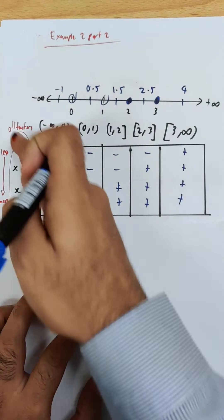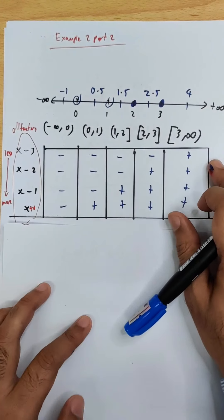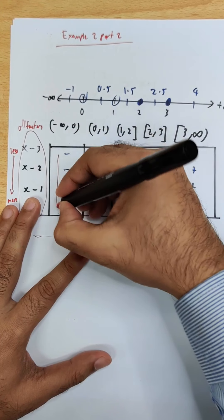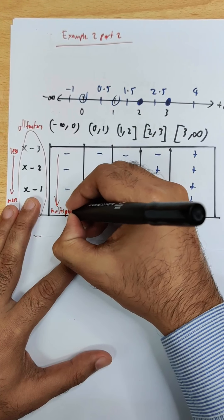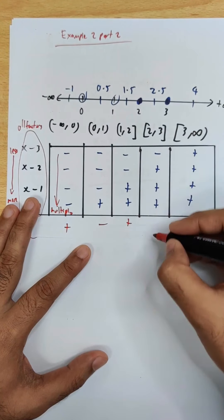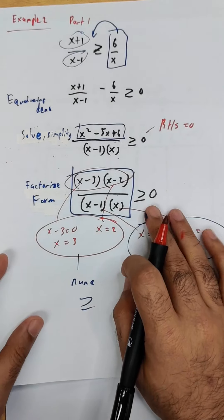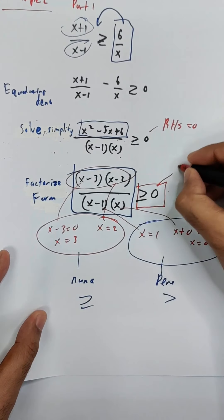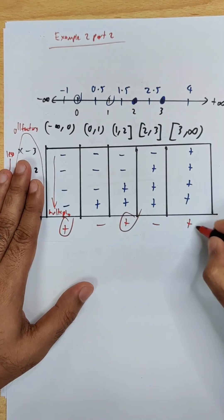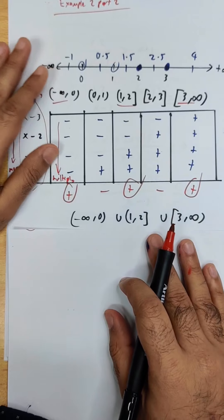For 3 to infinity, choose 4: positive, positive, positive, positive. Multiplying all signs in each column gives: negative, positive, negative, positive, positive. We want greater than zero, so more is positive. The answer lies in the three positive sections — copy those intervals and union them together.